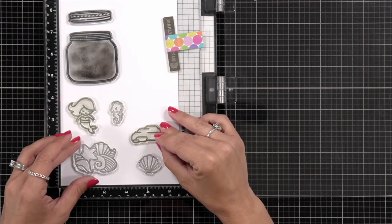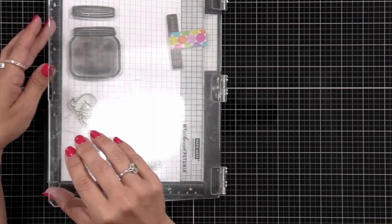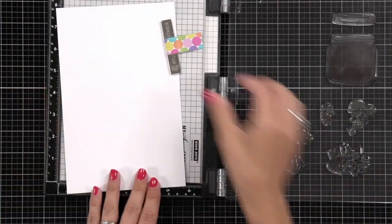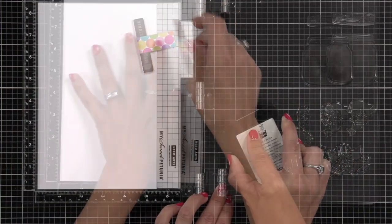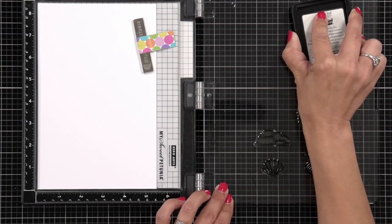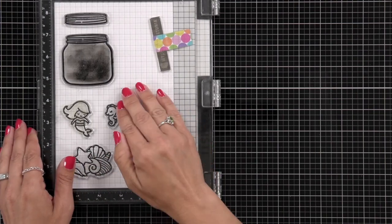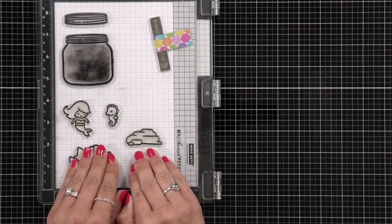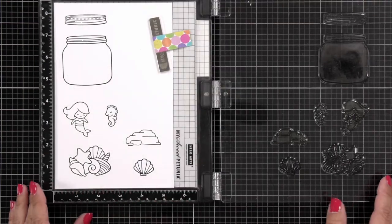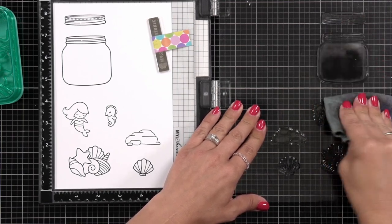The first thing I'll do is stamp out the images. These are all of the images I am going to stamp out in the Jet Black ink. I have my jar on the top, my mermaid, some rocks and also a seahorse, and I do also have the seashells from the How You Bean add-on set. The other images I'm going to do in color ink. So I'm stamping these down in that Jet Black ink, and then I did also stamp an extra rock just to have that for my scene building.